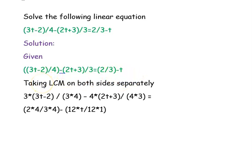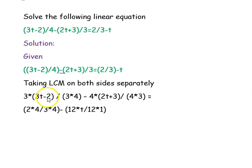Now we are going to take the LCM for both sides separately. On the left-hand side the denominators are 4 and 3, so the LCM of 4 and 3 is 12. To make the denominator 12, for the first expression we multiply numerator and denominator by 3, giving 3(3t minus 2) over 12. For the second expression we multiply by 4, giving 4(2t plus 3) over 12.